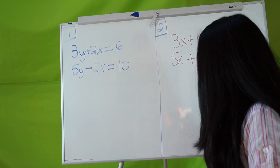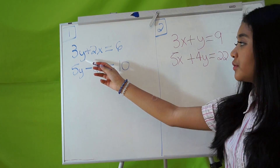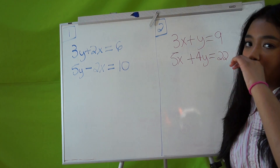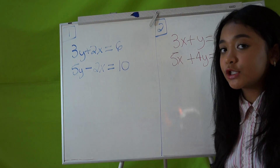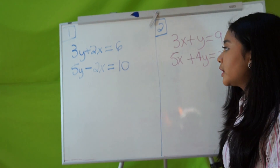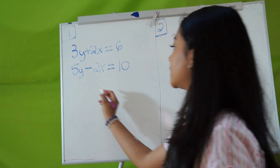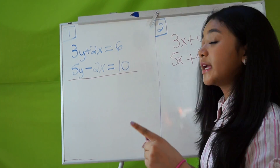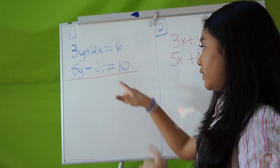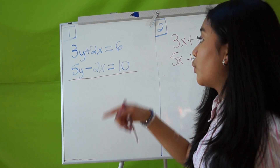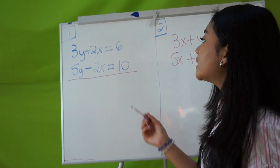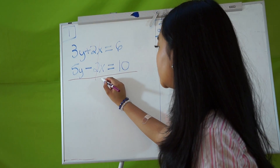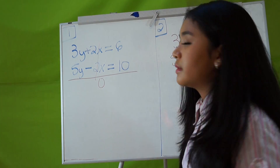So here we have number one. We have 3y plus 2x equals 6, and 5y minus 2x equals 10. These are systems of linear equations. With the elimination method, you can see how you have 2x here and minus 2x here — we want to find our x and y. This is really easy because we can just eliminate these terms and this becomes 0.